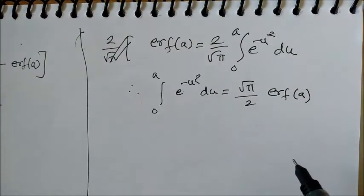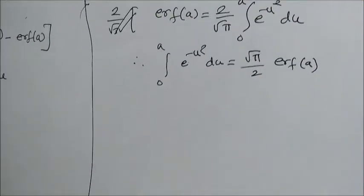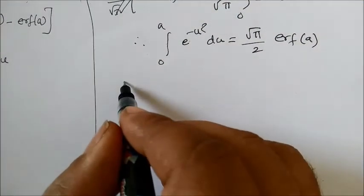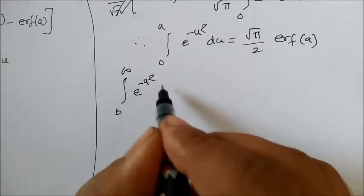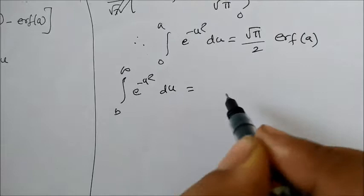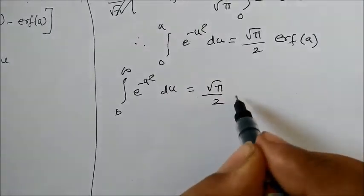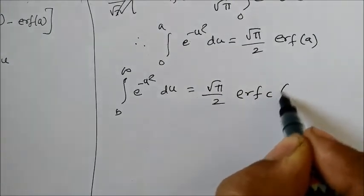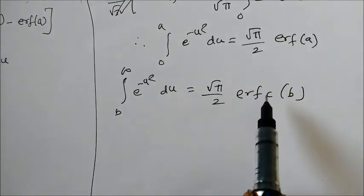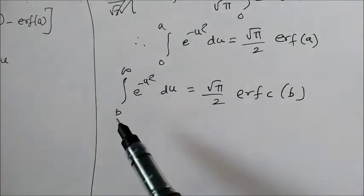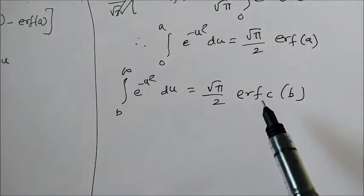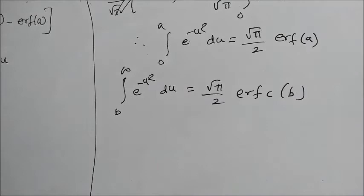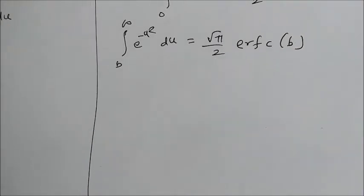I'm going to use that in the problem. Similarly, if you note, integral b to infinity, e to the power minus u square du can be written as root pi by 2 erfc of b. It's a complementary error function because it starts with b and ends at infinity. So let's use all this stuff in the given problem.